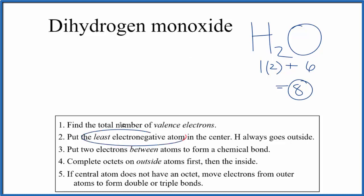We put the least electronegative element in the center, but hydrogen always goes on the outside. So we'll put the oxygen in the center and then hydrogen atoms on either side.